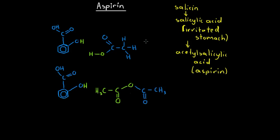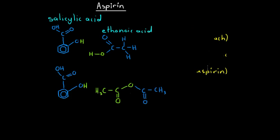Now we're going to look at ways we can produce acetylsalicylic acid from salicylic acid. Here we've got the chemical structure of salicylic acid, and here we've got the chemical structure of ethanoic acid. If we take a molecule of salicylic acid and react it with a molecule of ethanoic acid, we can produce our aspirin. These molecules react via a condensation reaction, which is also an esterification reaction. In green we've got two hydrogen atoms and an oxygen atom that come off to produce a water molecule — that's why we call this a condensation reaction.